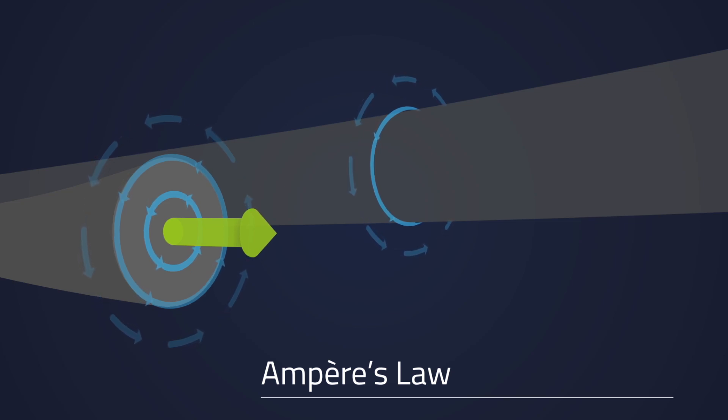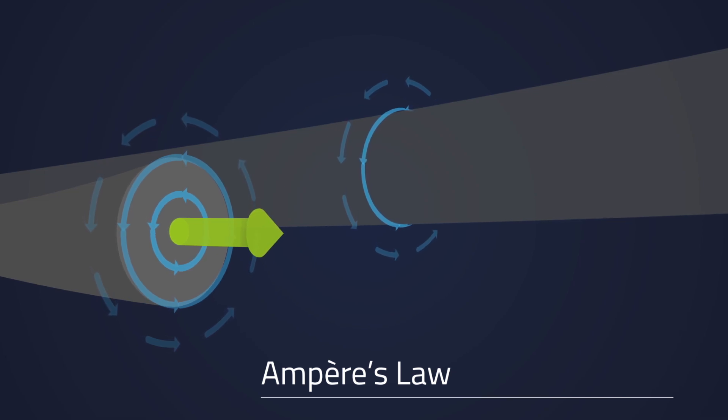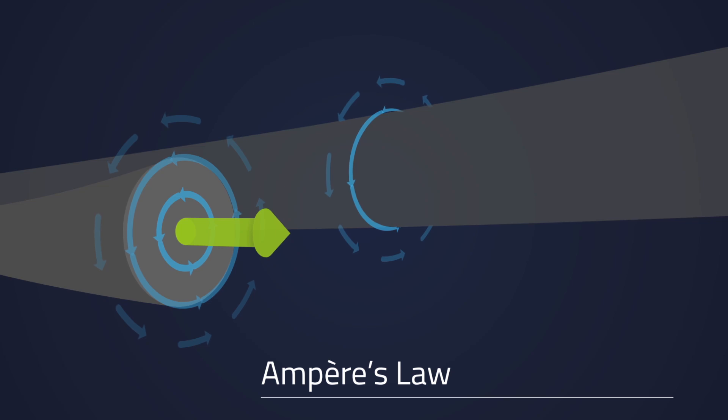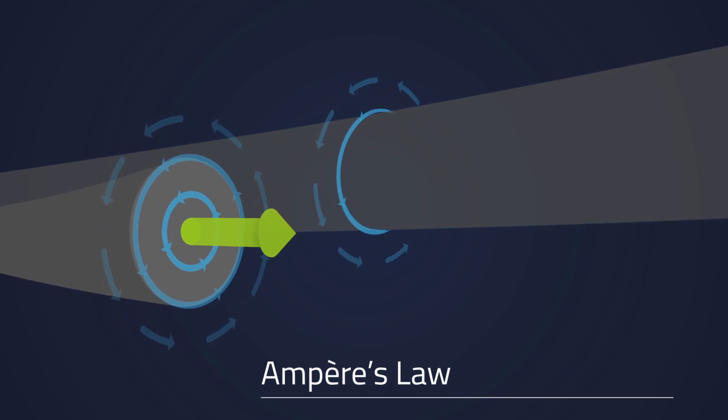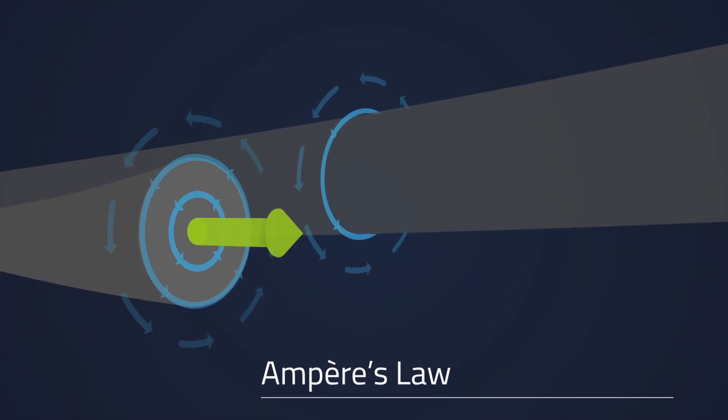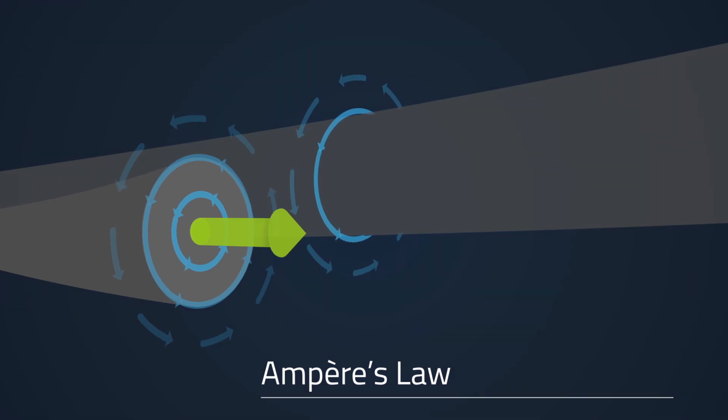We can also explain why two current conductors attract each other when both currents flow in the same direction. In the space between the conductors, the magnetic field lines from the two conductors cancel each other out. Both conductors still experience the force of the magnetic field at the outside, and they move towards each other.